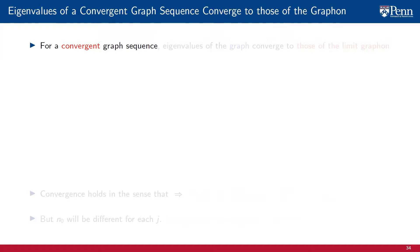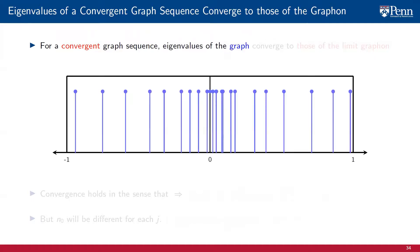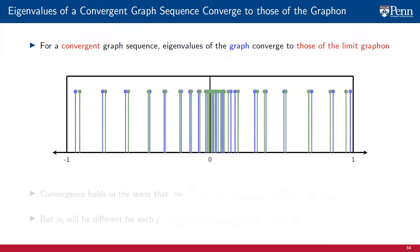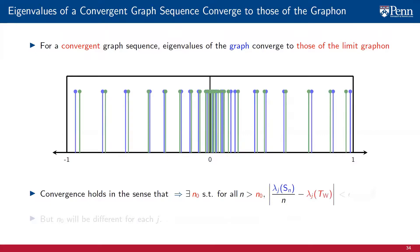According to the previous theorem, for any convergent graph sequence, the eigenvalues of the graphon in blue converge to those of the limit graphon in red. Note that, as expected from our earlier analysis, the eigenvalues of the graphon accumulate around zero, which does not hold for the eigenvalues of the graph. More precisely, convergence of the eigenvalues holds in the sense that there exists some n0 such that for every n larger than n0, the absolute value of the difference between the eigenvalue of the graph shift operator of Gn and the eigenvalue of the limit graphon is less than or equal to some epsilon. However, the value of n0 for which convergence holds is different for each j. Thus, the convergence of the eigenvalues is not uniform.